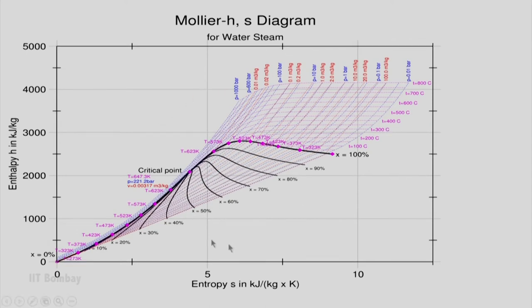What you see here is the actual Mollier chart or Mollier diagram or h-s diagram. On the y-axis we have enthalpy in kilojoule per kg, on the x-axis we have entropy s in kilojoule per kg Kelvin. This line is the saturated liquid line where x equals 0 and this line is x equals 100 percent.